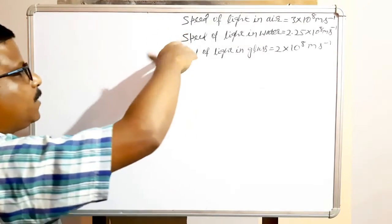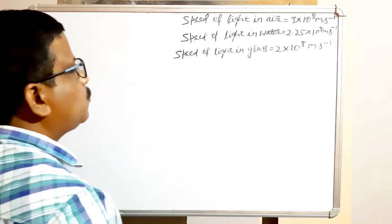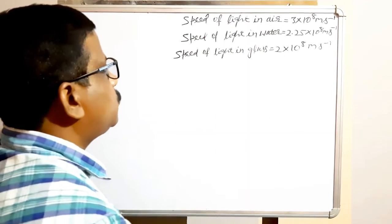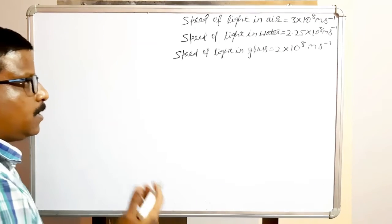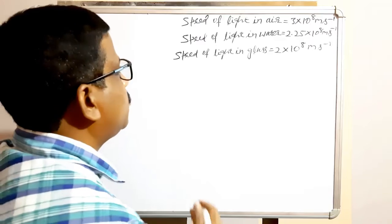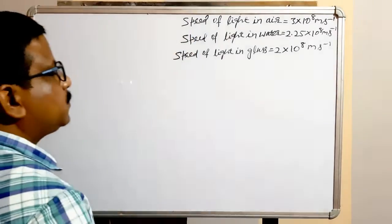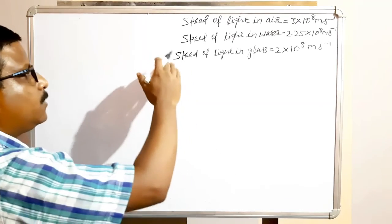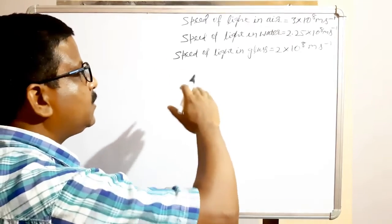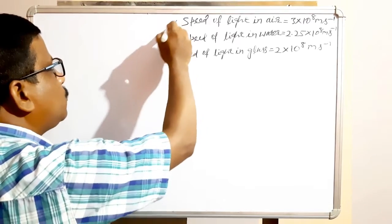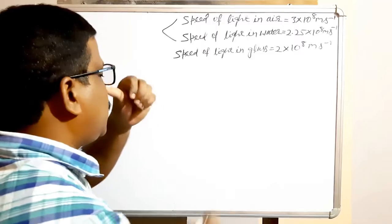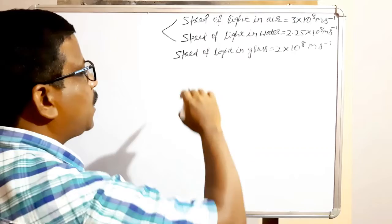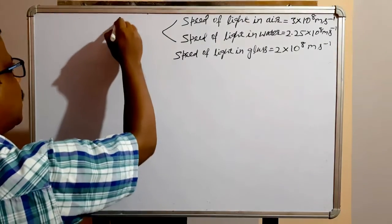Among the three mediums, the speed of light in air is most, then speed of light in water, then speed of light in glass. When we are discussing refraction, we have to take two mediums, because when a ray of light travels from one transparent medium to another, the light ray deviates. Comparing air and water: where the speed of light is more — in air — so air is the rarer medium. And where the speed of light is less, that is the denser medium.